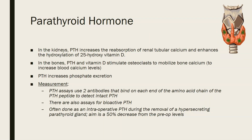Regarding parathyroid hormone: in the kidneys, PTH increases reabsorption of calcium in the renal tubule and enhances the hydroxylation of 25-hydroxyvitamin D to make 1,25-hydroxyvitamin D, the active vitamin D form. In the bones, parathyroid hormone and vitamin D stimulate osteoclasts to mobilize bone calcium to increase blood calcium levels. PTH also increases phosphate excretion in the urine. PTH assays typically use two antibodies that bind each end of the PTH peptide chain to detect intact PTH — it is an immunoassay.